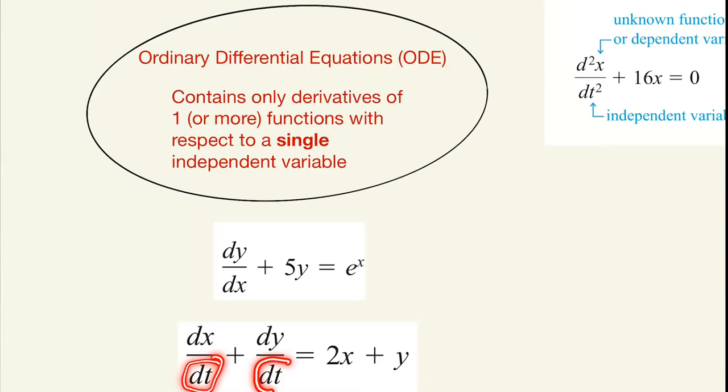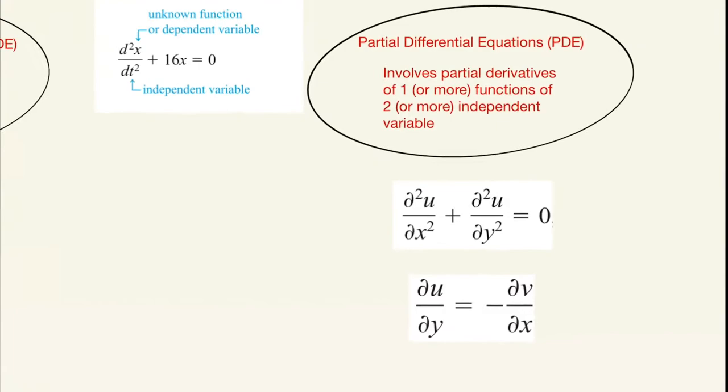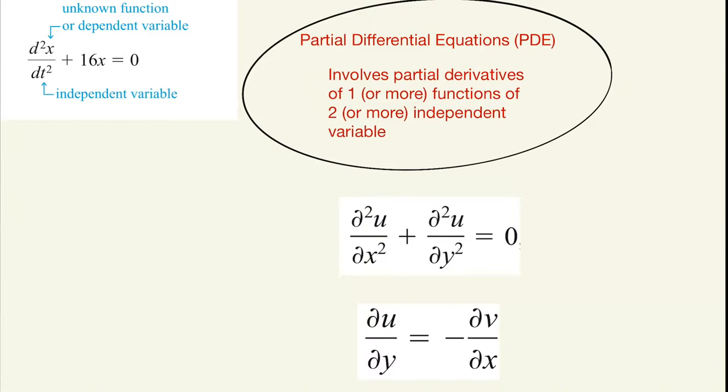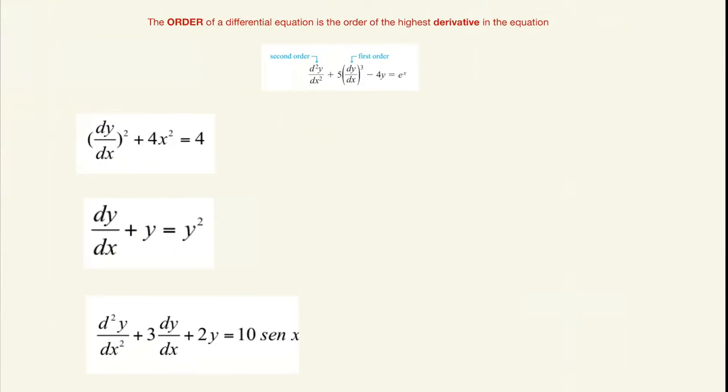In the following example, we have two different functions depending on the same single independent variable. Partial derivatives involve one or more functions depending on two or more independent variables. As we see in the examples, it's the same function depending on two different independent variables — likewise for the other example.